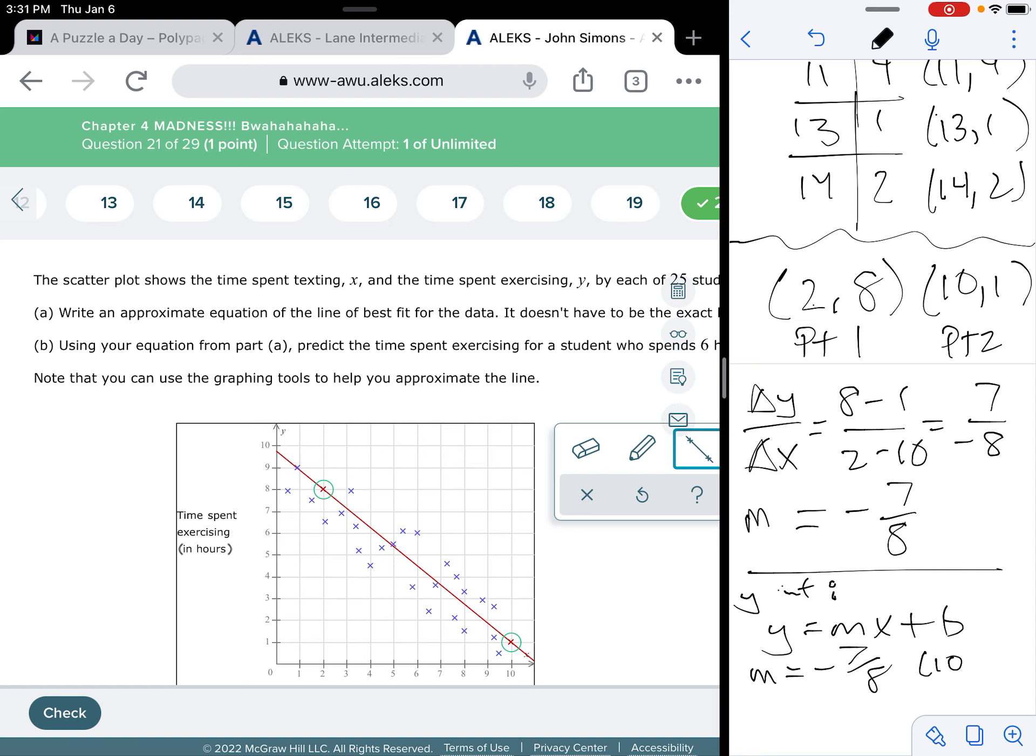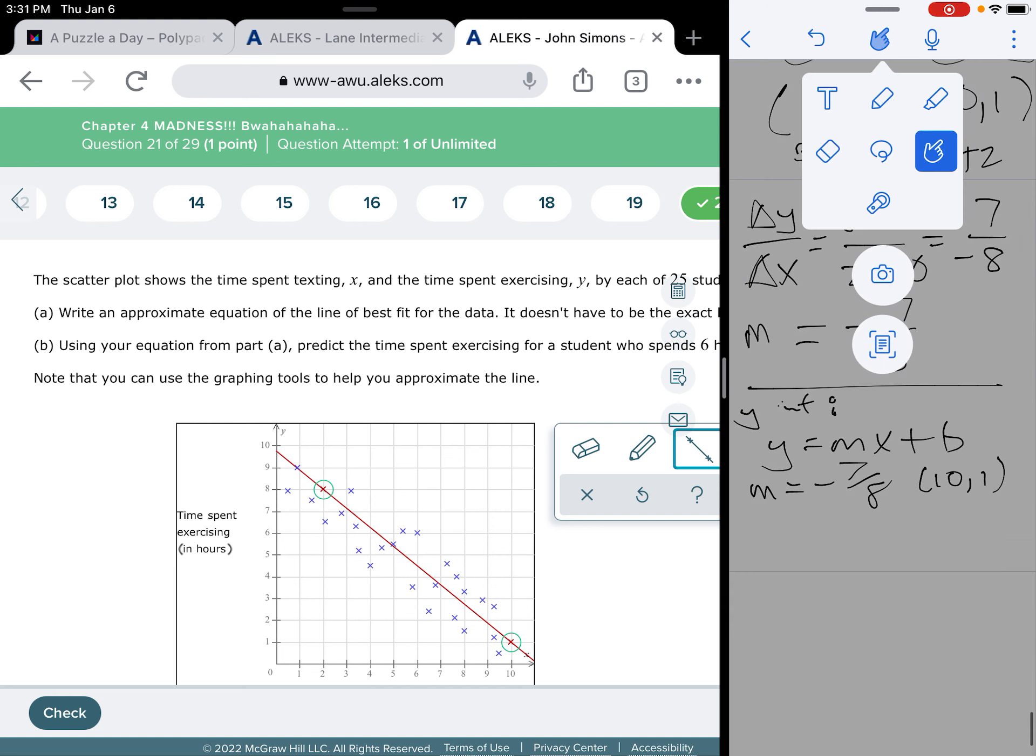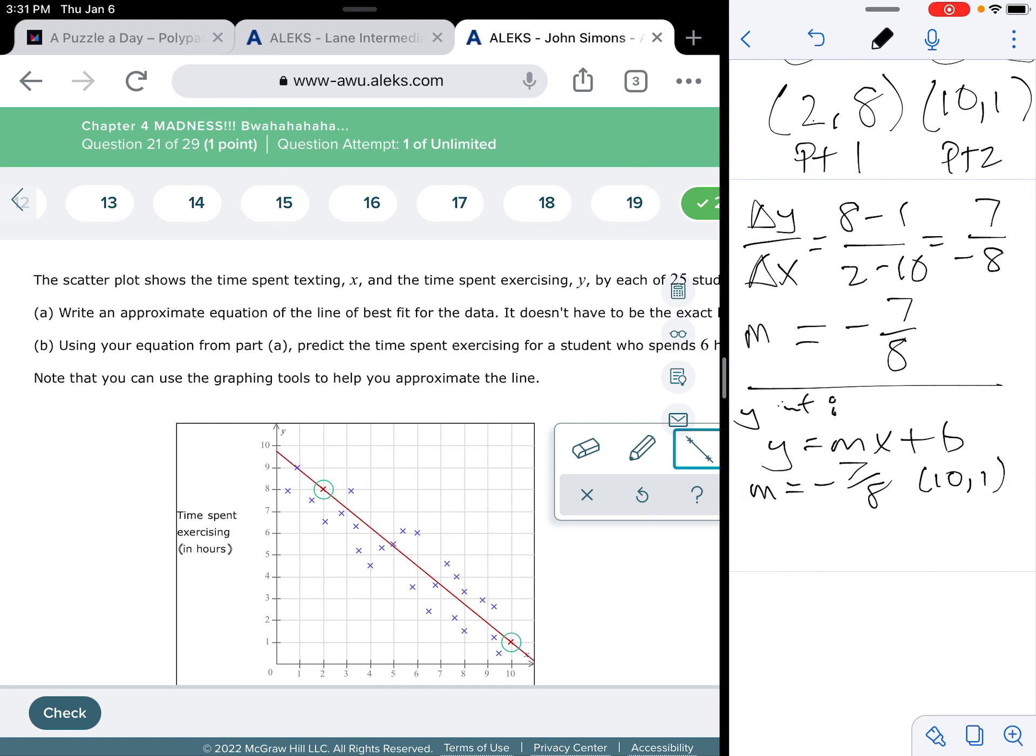So, we're going to use, we know that m is negative 7 eighths and we know that we have two points to work with. So, let's use that point (10, 1) as the point that we're going to work with. Let's put it in this equation right here.